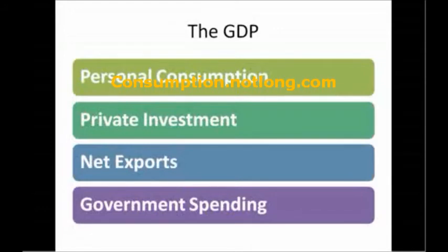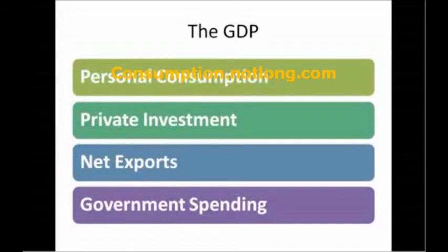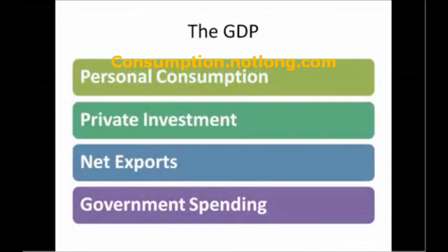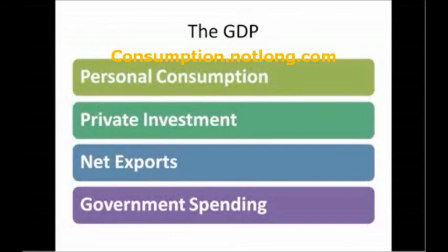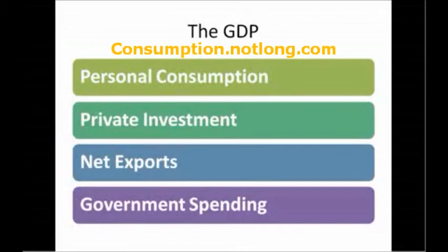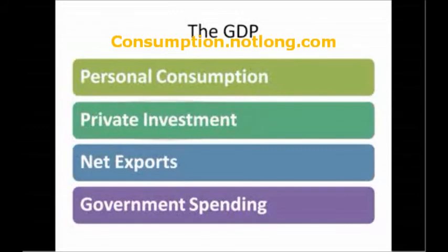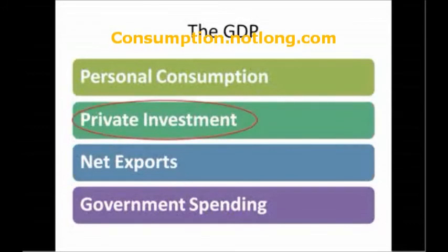Now let's think about what this all means. If you add these four categories together, you get the total GDP of the United States. The most important takeaway here is that personal consumption hasn't really shrunk. Government spending might have increased a little bit, but the real contraction has occurred in private investment. People are not making long-term bets on the growth of the economy.